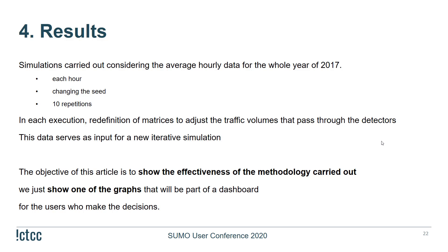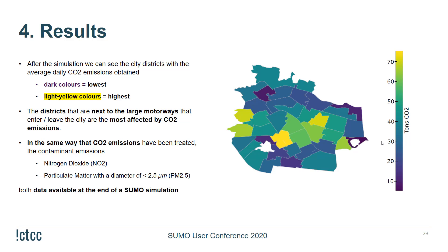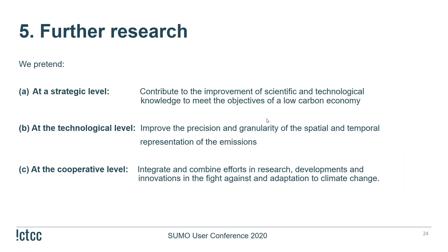The objective of this article is to show the effectiveness of the methodology, so we present one of the dashboard graphs for decision makers. We can see the city neighborhoods with daily average CO2 emissions obtained after simulation. Darker colors represent the lowest emissions and light yellow colors the highest. We confirm the unexpected result that districts next to large motorways entering and leaving the city are most affected by CO2 emissions. In the same way, contaminant emissions such as nitrogen dioxide (NO2) and particulate matter with a diameter less than 2.5 micrometers (PM2.5) are also fully available at the end of the simulation.